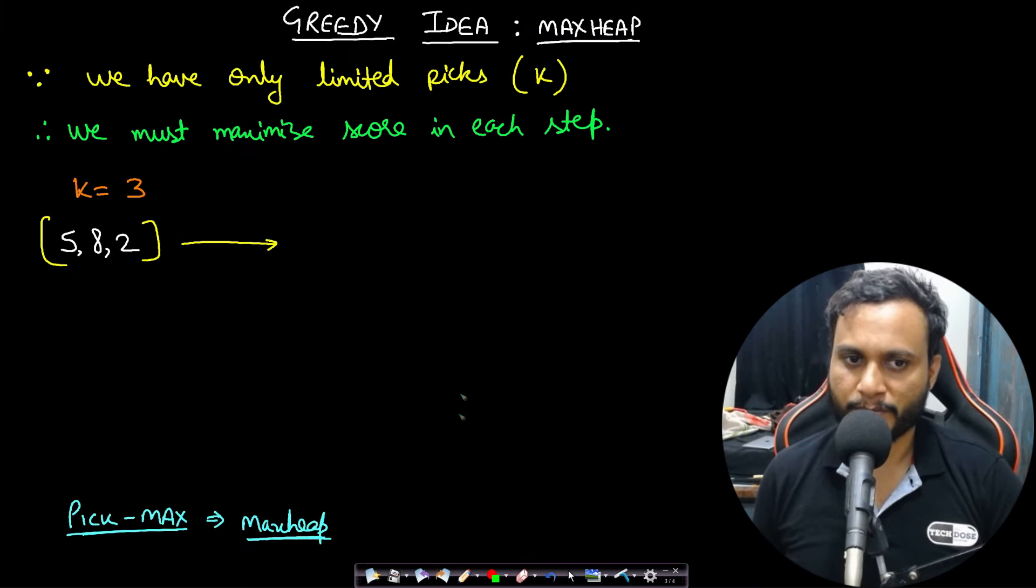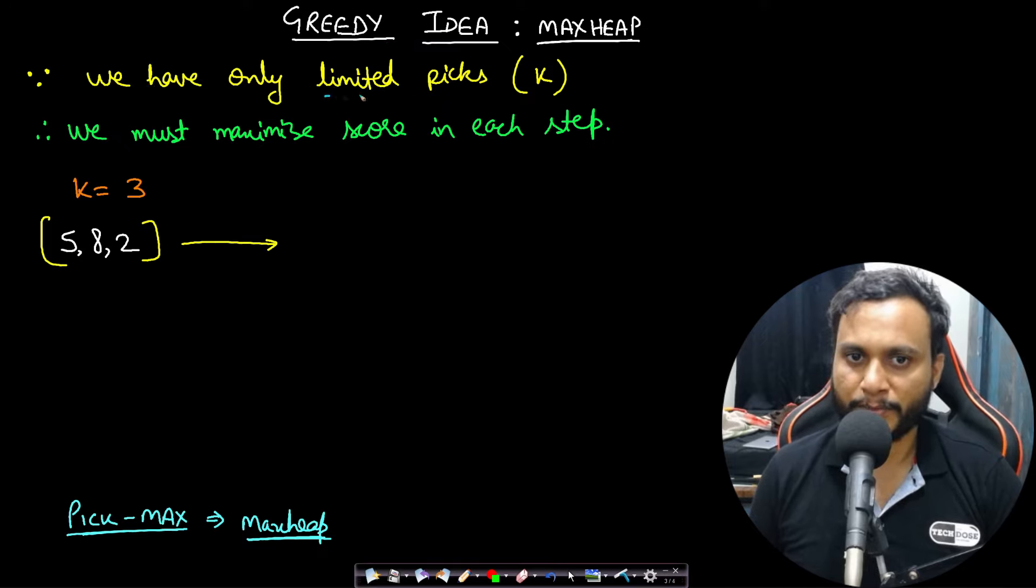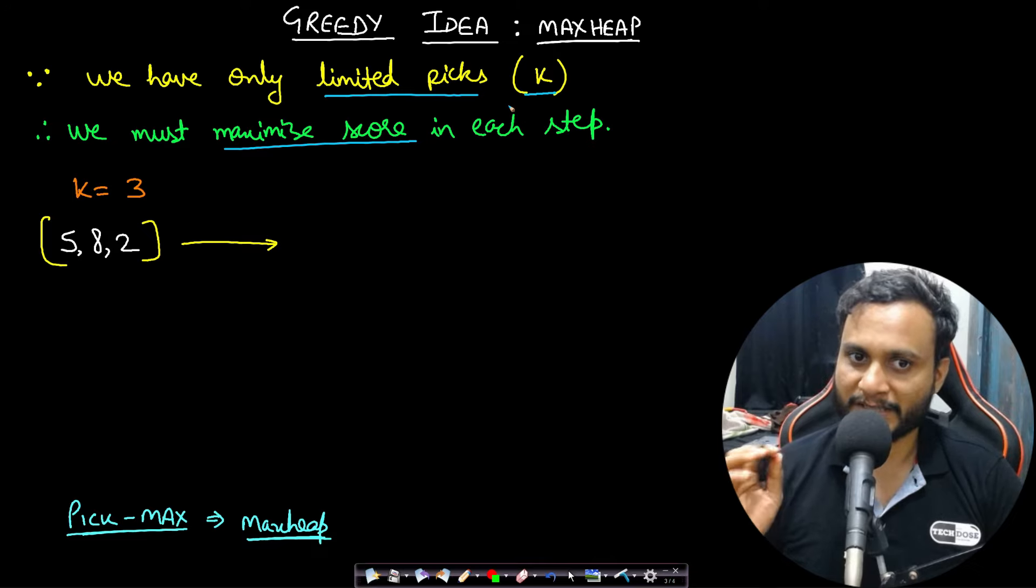Let's look at the idea for solving this problem. The idea is simple, we have to go with the greedy idea. We have only limited picks available with us, which is k picks, and we must maximize our score in each step so that we can reach to the maximal score.